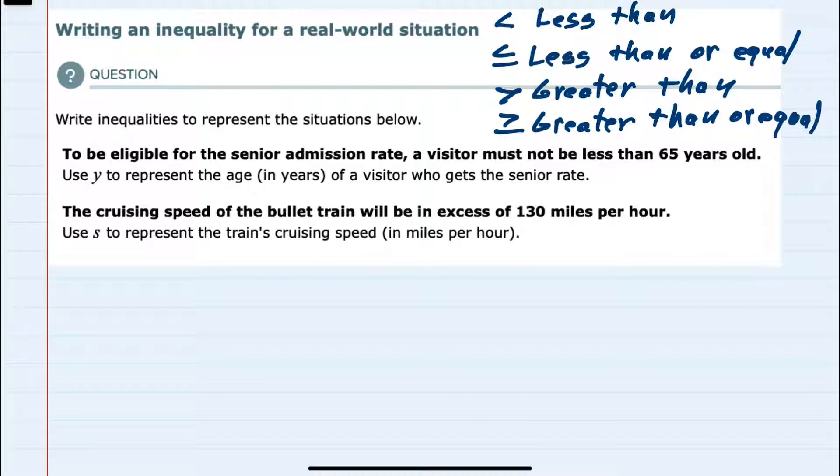Reading the first situation, to be eligible for a senior admission rate, a visitor must not be less than 65 years old. Use y to represent the age of a visitor who gets the senior rate.